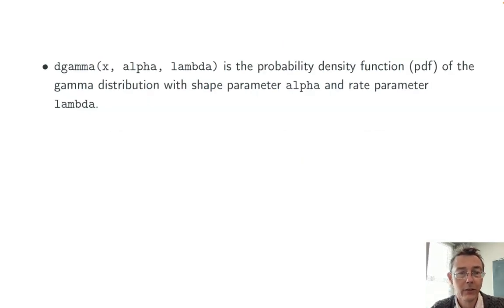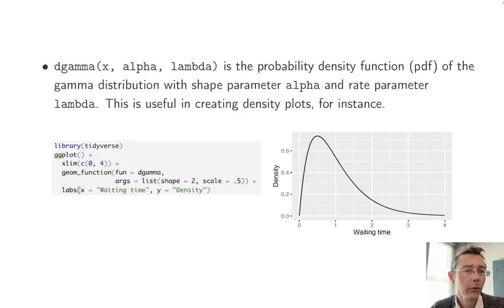Finally is the dgamma function, the probability density function or PDF of the gamma distribution with those same parameters. This is mostly useful in creating density plots. Here's some code to generate a density plot for that same gamma distribution we've been looking at.